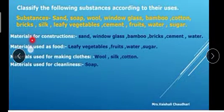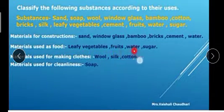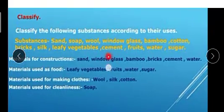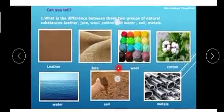First is materials for construction - in construction we use mostly sand, window glass, bamboo, bricks, cement, and water. Materials used in food - leafy vegetables, fruits, water, and sugar. Materials used for making clothes - wool, silk, and cotton. Materials used for cleanliness - soap and also water.